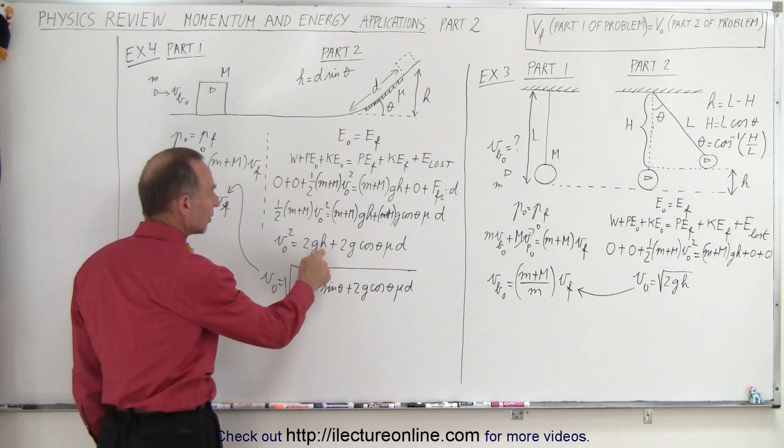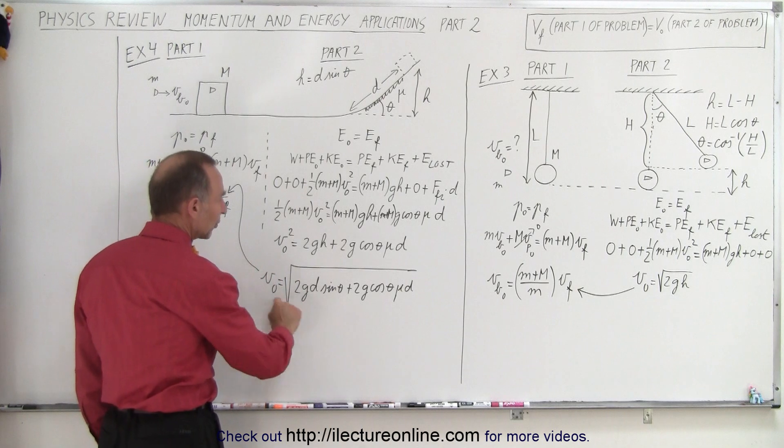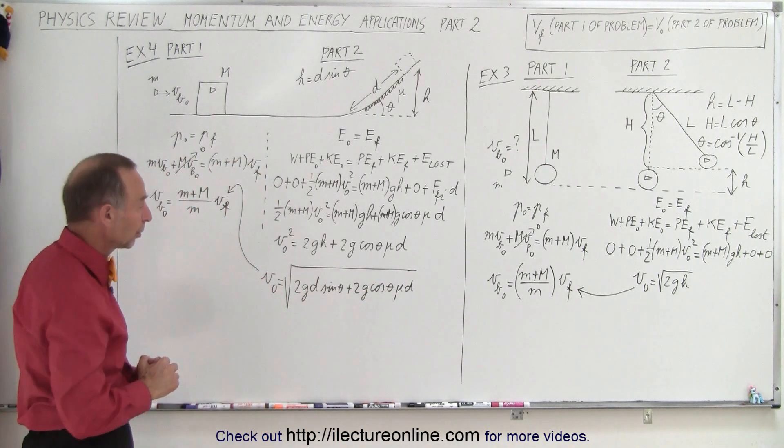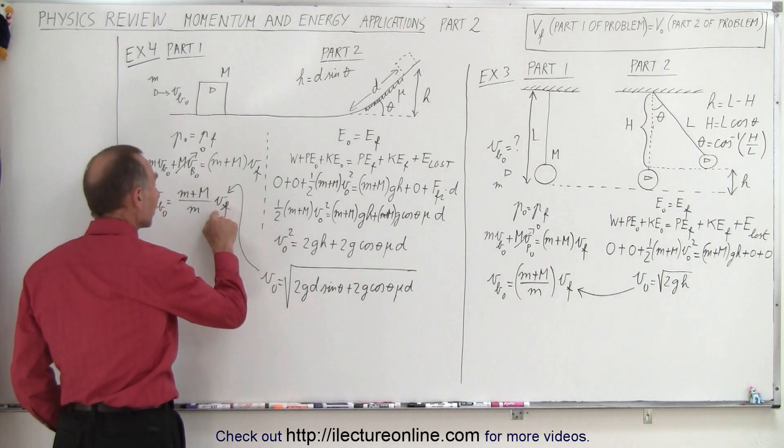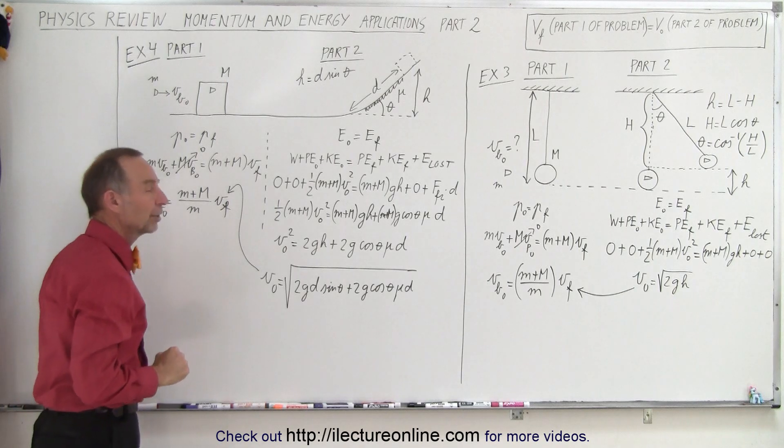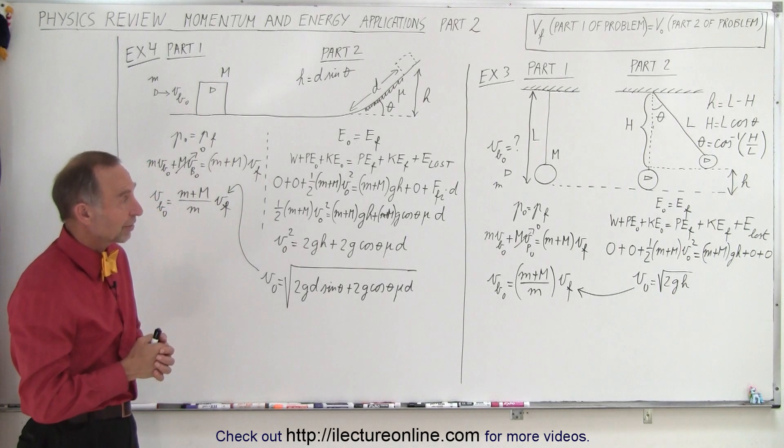And of course, if we want to solve for d in terms of h, h is d sine theta. Take the square root of both sides, and this is what you get for the initial velocity of the block and the bullet. That means we can plug that into the final velocity of the bullet and the block after the collision, which allows us to solve for the initial velocity of the bullet. So that is how we solve these types of problems.